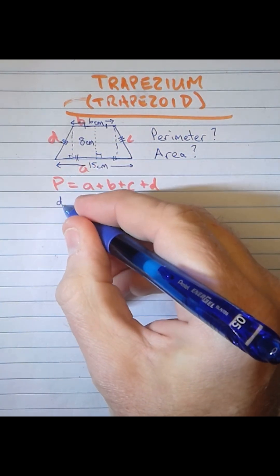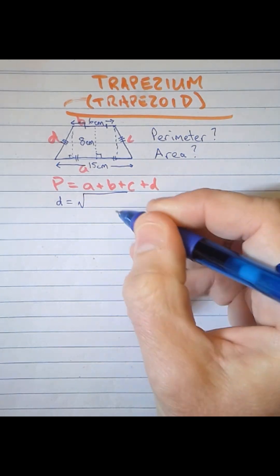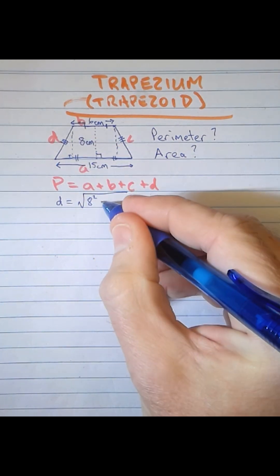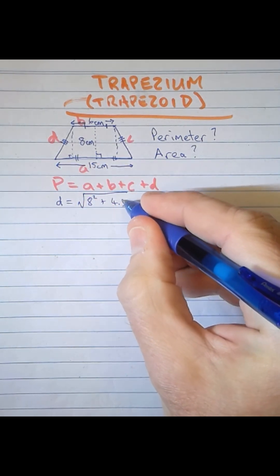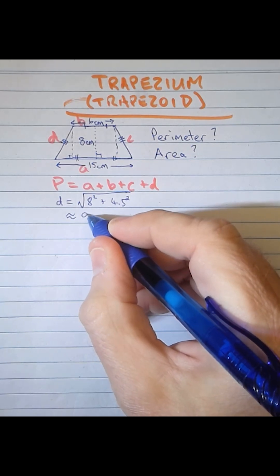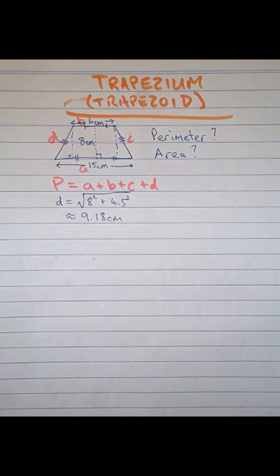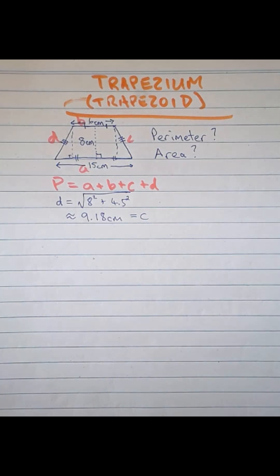This means that D is going to be given by Pythagoras' theorem as the square root of 8 squared, this side of the triangle, plus 4.5 squared, the other side of the triangle. Jumping to your calculator, that's going to give you approximately 9.18cm, the value of D. Remember that this is also the same value for the length of C.